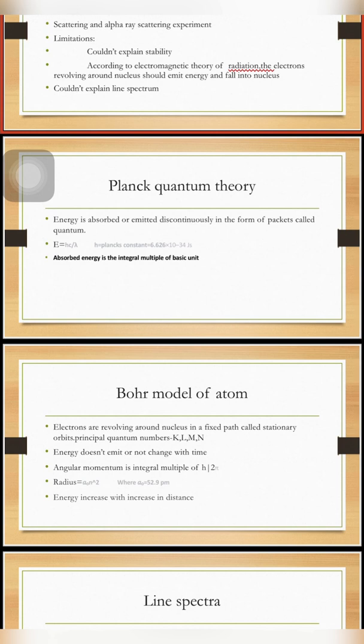Planck Quantum Theory: Energy is absorbed and emitted in packets called quanta or photons. The equation is E equals h nu, where nu is frequency. Frequency equals c by lambda, the velocity of light by wavelength. h is Planck's constant, equal to 6.626 times 10 to the minus 34 joule second. The absorbed energy is the integral multiple of basic unit.